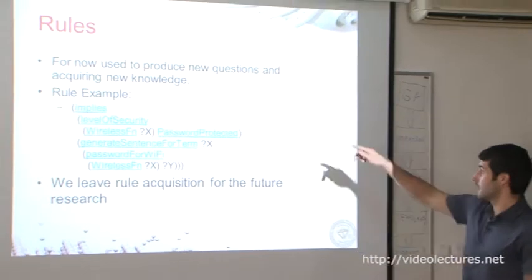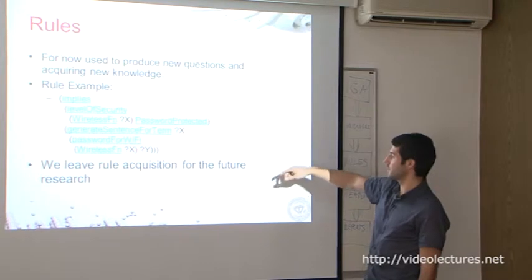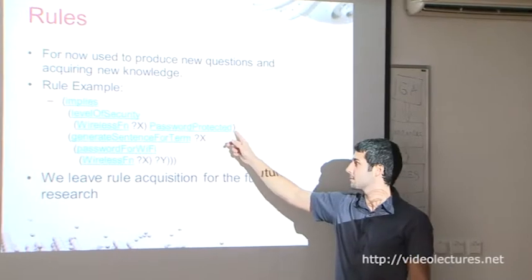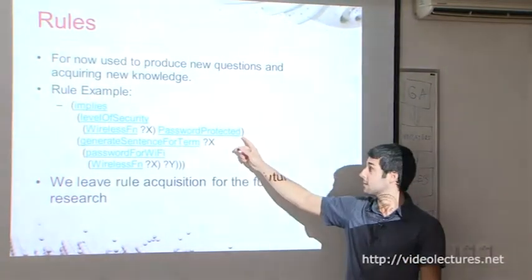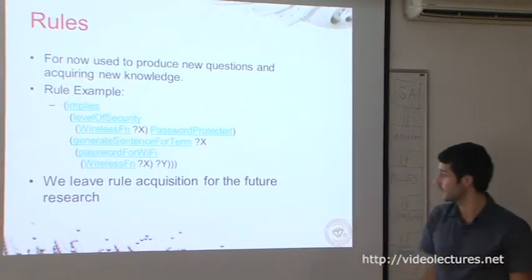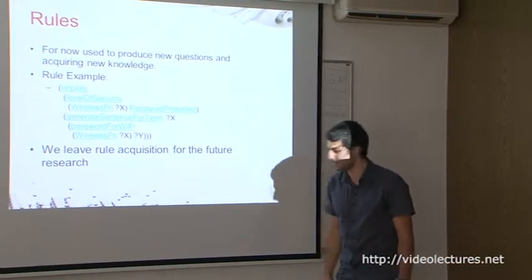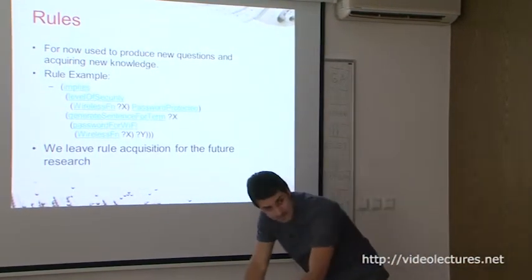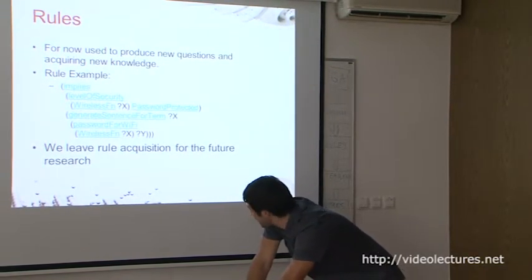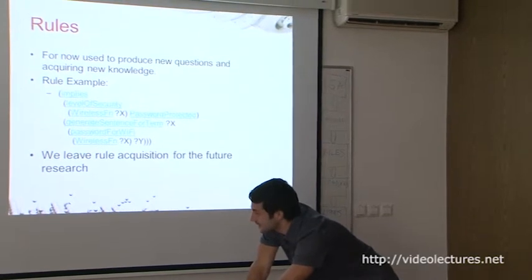This is the last part of acquisition — rules, which we don't do yet. For example, this is the rule which tells the system: when you answer that the wireless in some bar is password protected, then it will ask for the password. So we do follow-up questions with rules. It would be nice if this could be acquired automatically as well, but it's not easy. We have to finish the first parts of the acquisition and then we could focus on the rules.